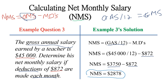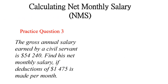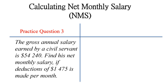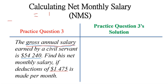I hope that was very clear. Here is a practice question for you to do. Based on what I just explained, pause the video and try working out this question. Now let's go through the solution together to confirm you got it correct. The gross annual salary of a civil servant is $54,240.